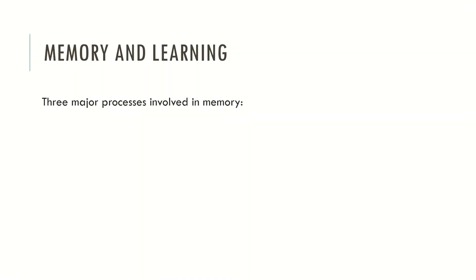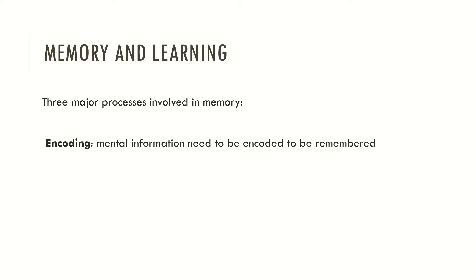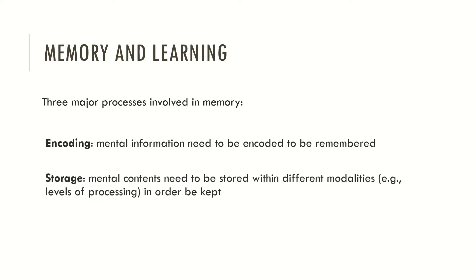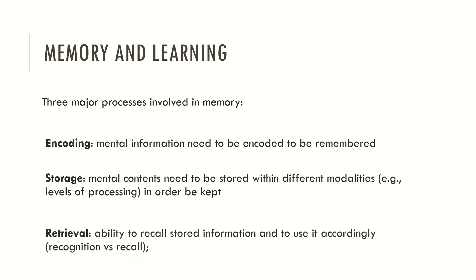Typically, three major processes are involved in memory. Encoding, which means that mental information needs to be encoded to be remembered. Storage, where mental contents need to be stored with different modalities, which may be described as levels of processing, in order to be kept. And retrieval, which is the ability to recall stored information and to use it accordingly. We can differentiate two processes: recognition and recall.